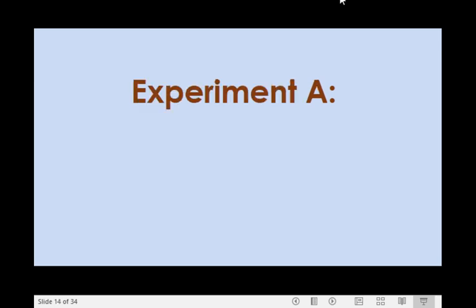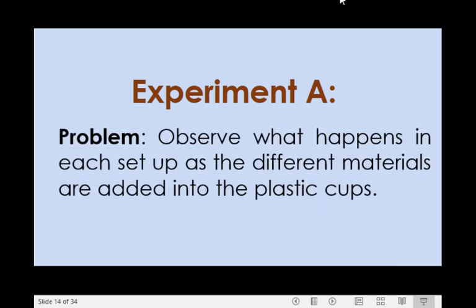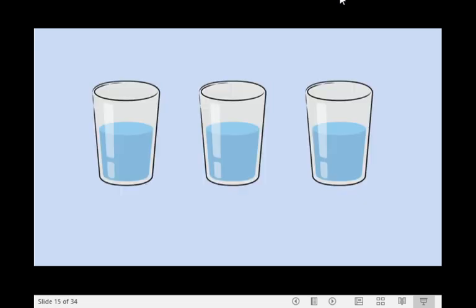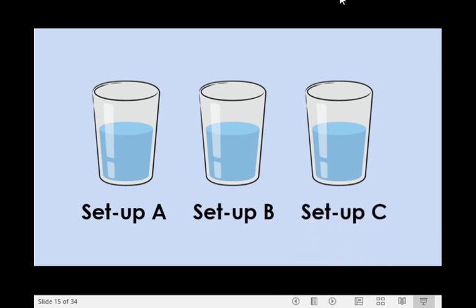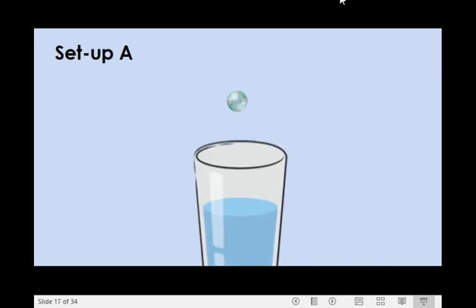For experiment A, you have to observe what happens in each setup as the different materials are added into the plastic cup. First, half fill the three plastic cups with water. Label the first plastic cup as setup A, and the other two plastic cups as setup B and setup C. Drop the marble or rock in the setup A.